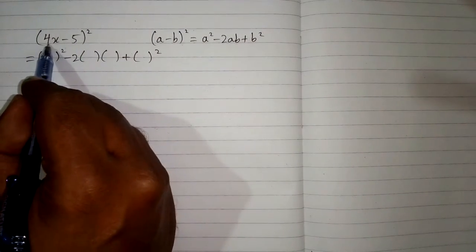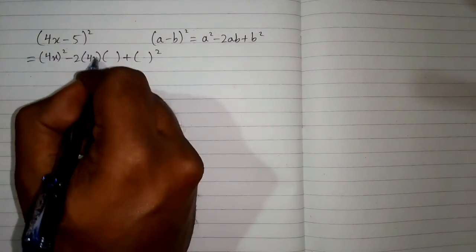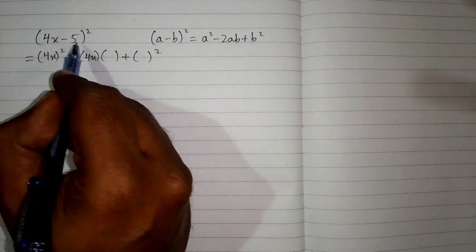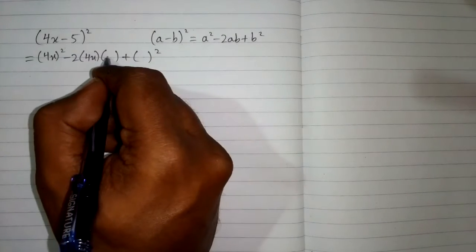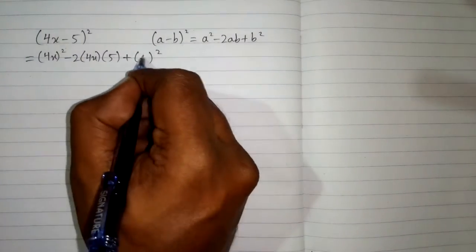Now we put the value of 4x in place of a, so we will write 4x over here and over here, and then the value of b which is 5, we put the value of b over here and over here.